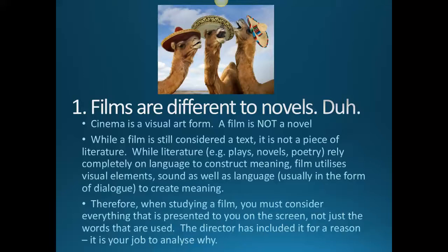The first thing to know in terms of cinematics is that films are different to novels. Cinema is obviously a visual art form, and a film is not a novel. So even though we consider film a text, it's not a piece of literature — it doesn't just rely on language to construct its meaning. It uses visual elements and sound elements as well.